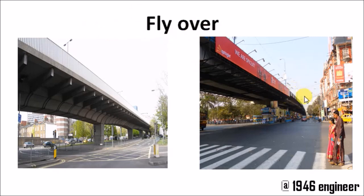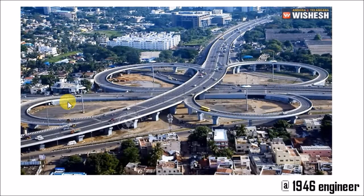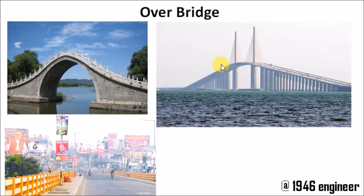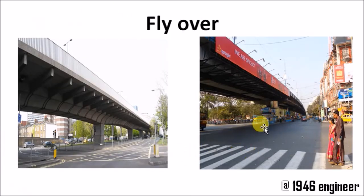Coming to flyovers — these are structures built to make our travel faster. The name itself suggests flyover: we fly over intersections, streets, narrow streets, or traffic signals. The main difference between a flyover and an over bridge is that an over bridge can span over water, road, or rail. But a flyover mainly concentrates on roads and is built to avoid traffic congestion.